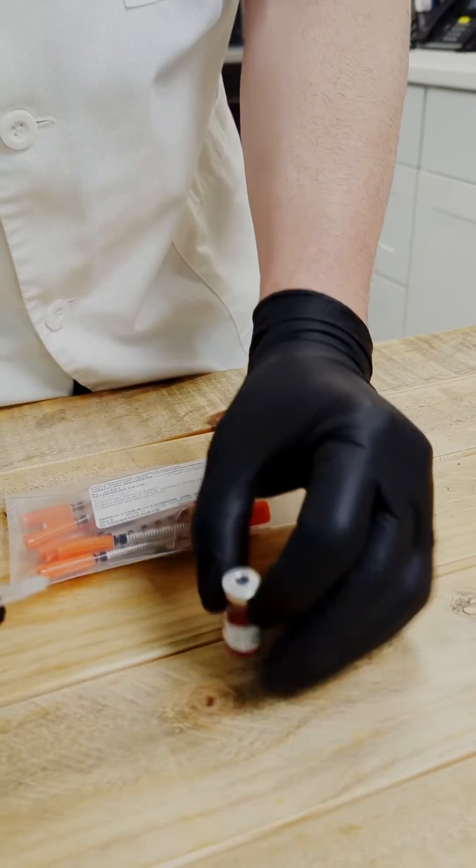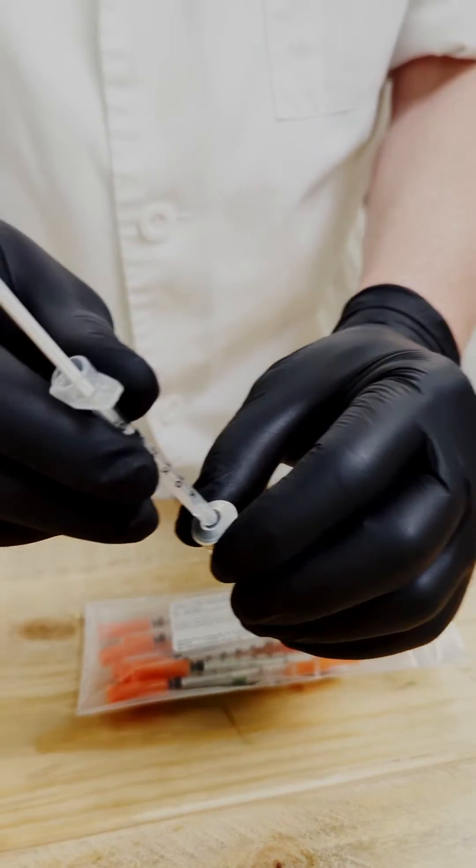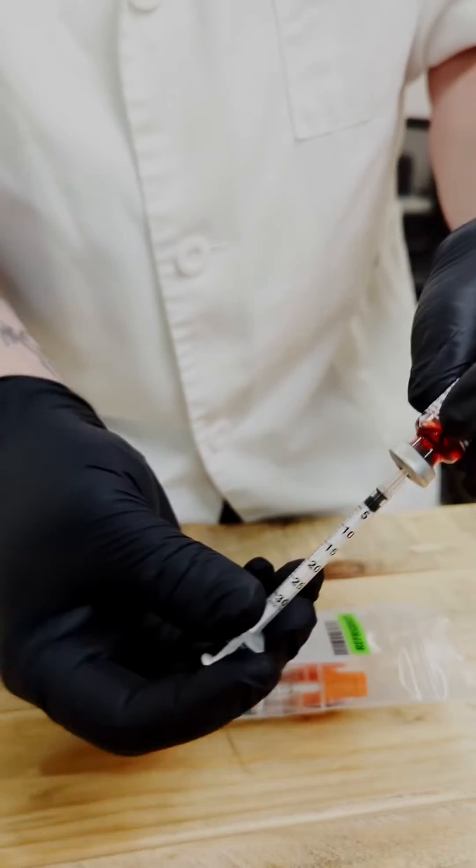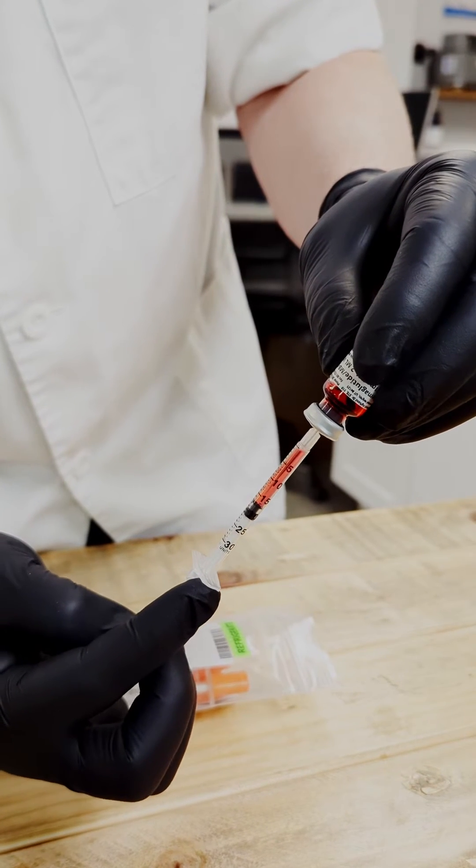We'll uncap it, poke it through, and then inject it into the vial. At this point we'll want to flip that vial upside down and draw 25 units out.